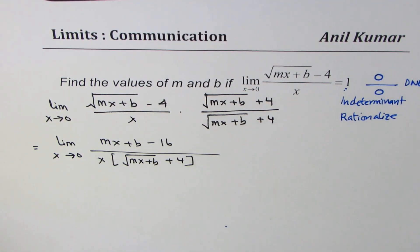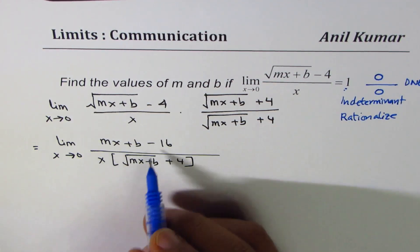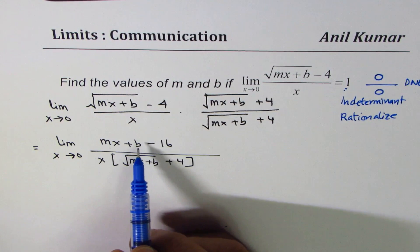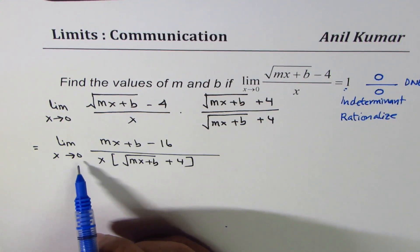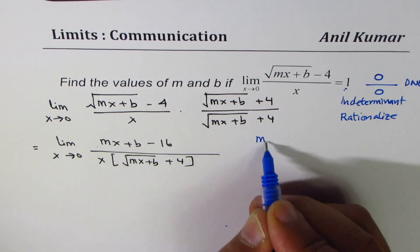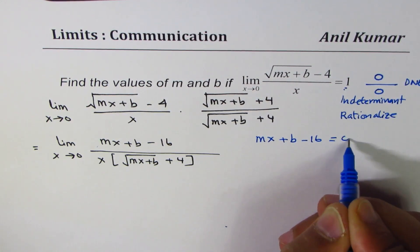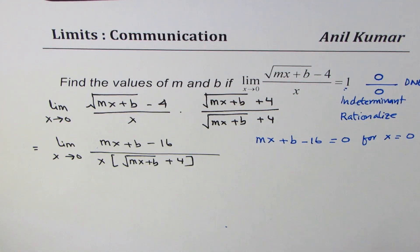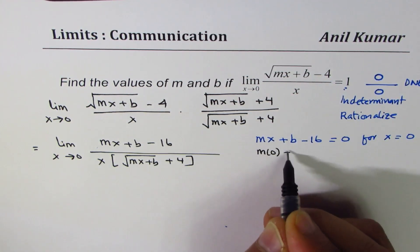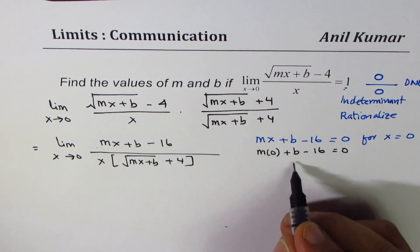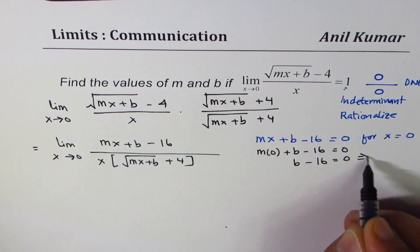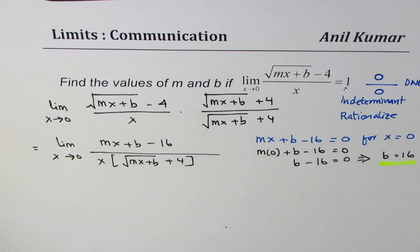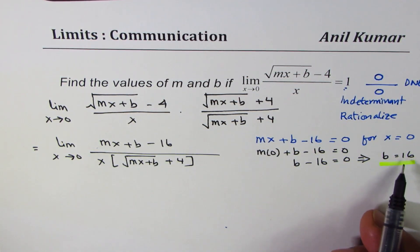Since we want the numerator to be 0, x must be a common factor. If I substitute x equals 0 into mx plus b minus 16 equals 0, I get m times 0 plus b minus 16 equals 0, which means b minus 16 equals 0, and therefore b equals 16. So we got the value b equals 16 by equating the numerator to 0.